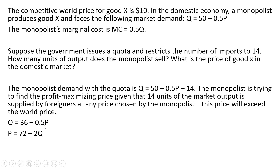Dividing everything through by 0.5, and now we're going to get marginal revenue. Marginal revenue is the inverse market demand with a slope that is twice as steep. So instead of minus 2q, marginal revenue will be 72 minus 4q.